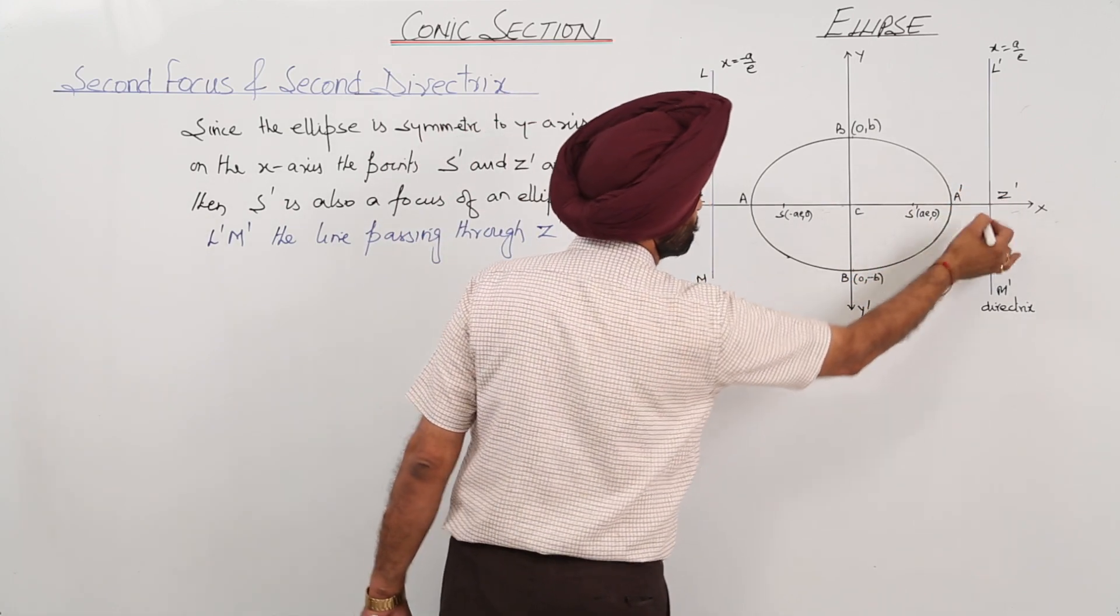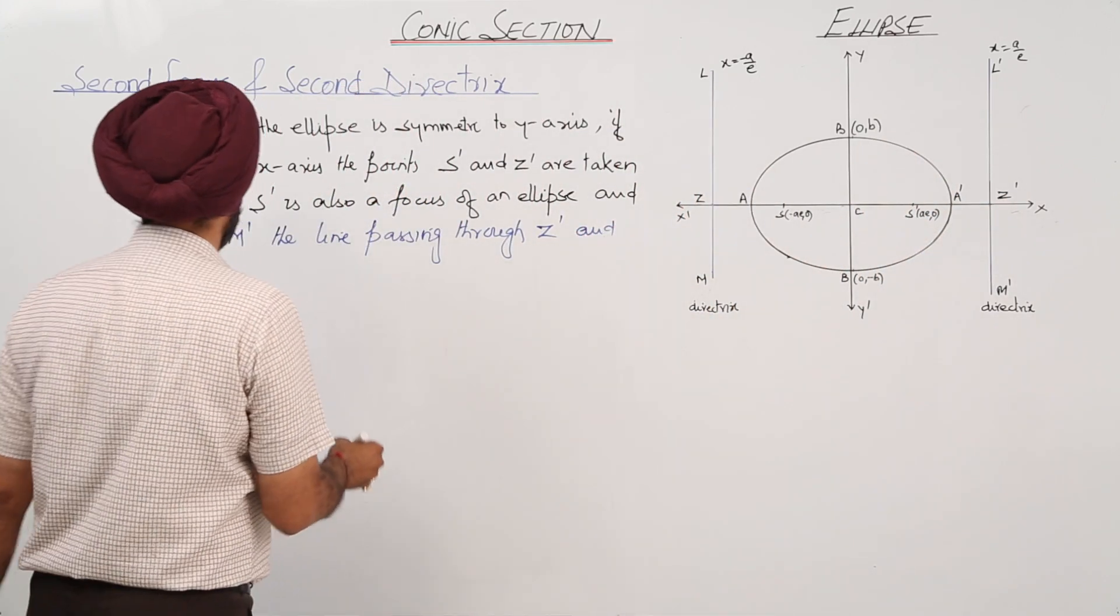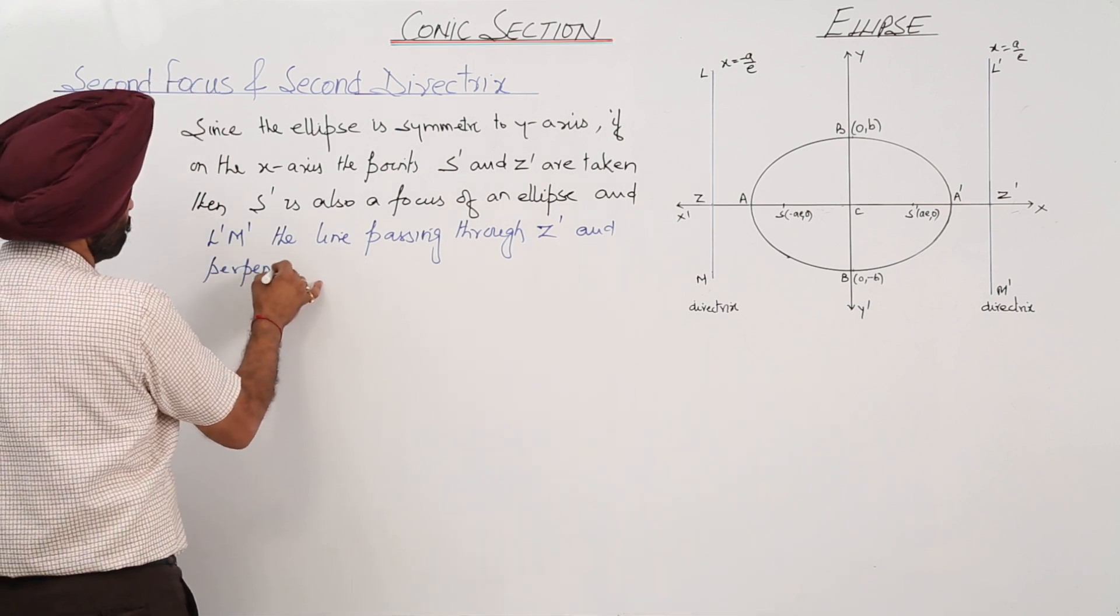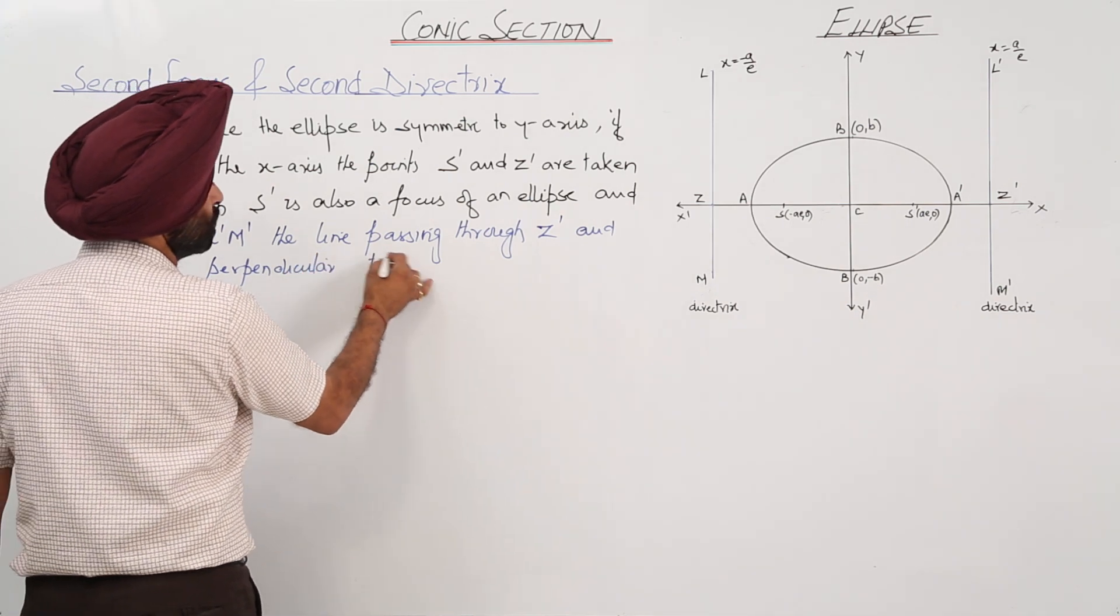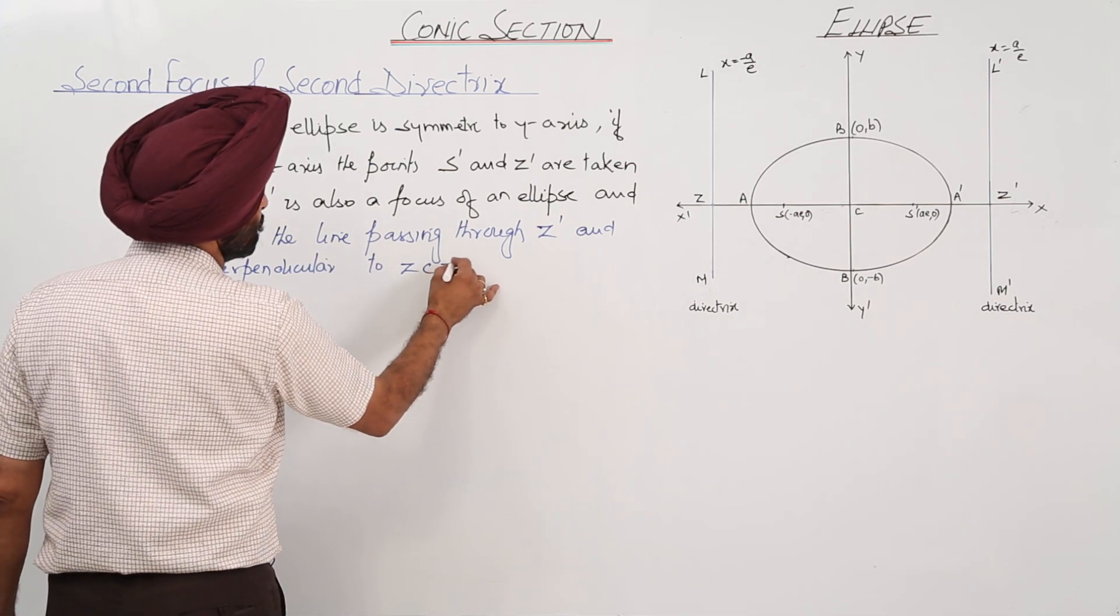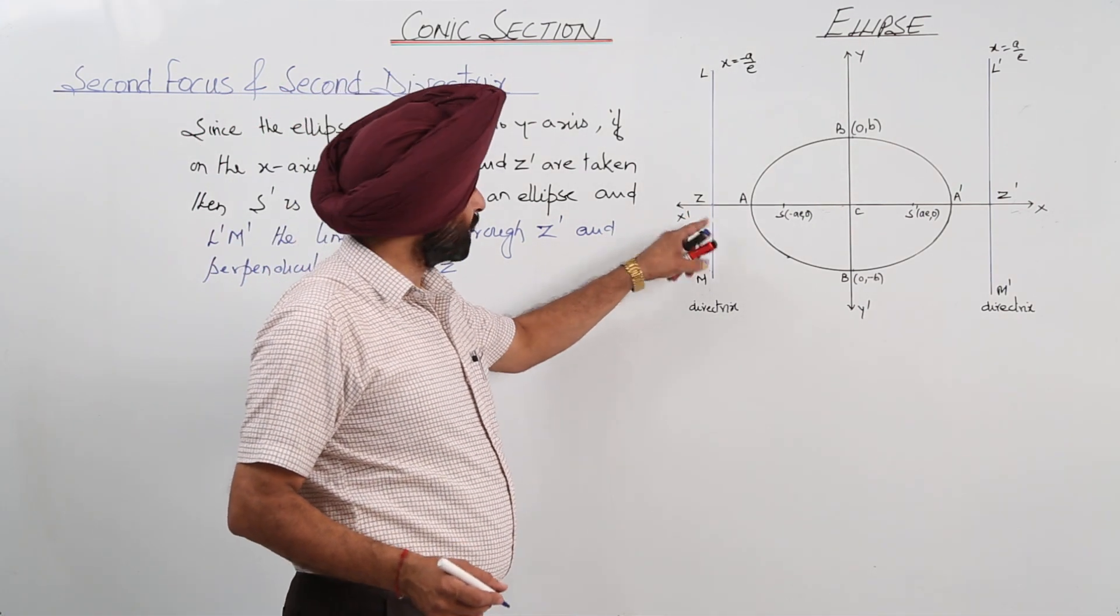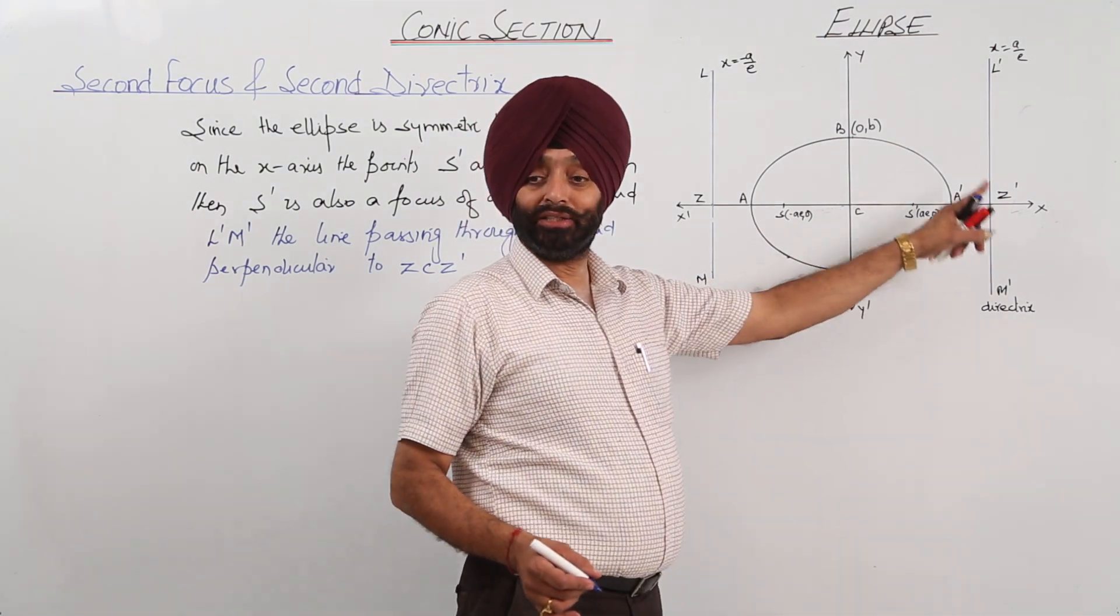This point line is passing through Z dash, and perpendicular to ZC Z dash. Z is the point of the first directrix. Then C be the center and Z dash.